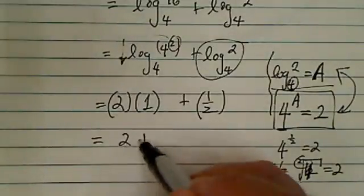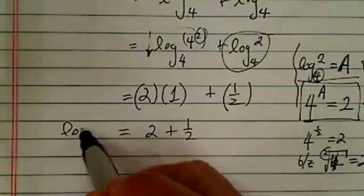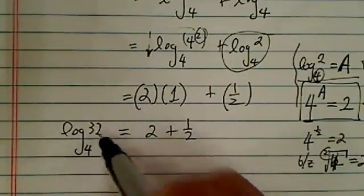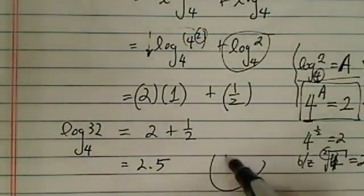So now we have 2 plus half. So without that calculator, we found that log base 4 of 32 is equal to 2.5. Have a confident day.